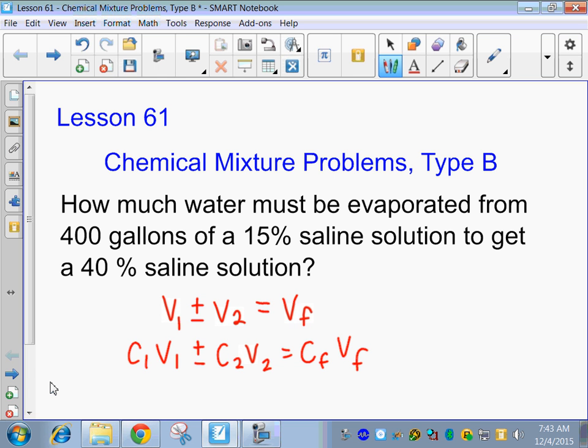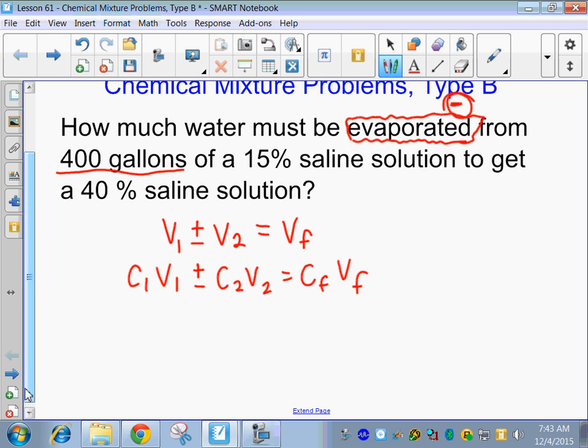How much volume must be evaporated? So if we have the word evaporated, you guys might want to write that in your notes. Do you guys think that means plus or minus? Yeah. Evaporated means we're going to subtract. And we're subtracting from 400 gallons. So our first equation is that we have 400 gallons, just the volume, and we're subtracting another volume to get a final volume.